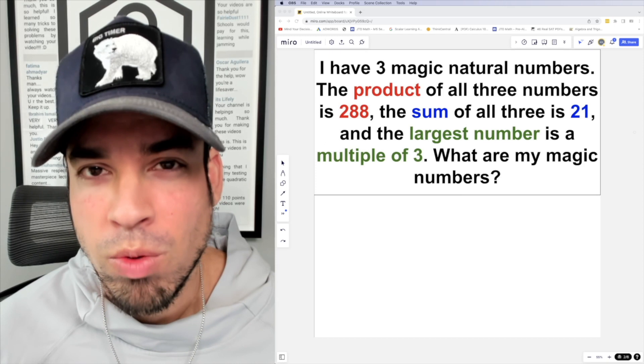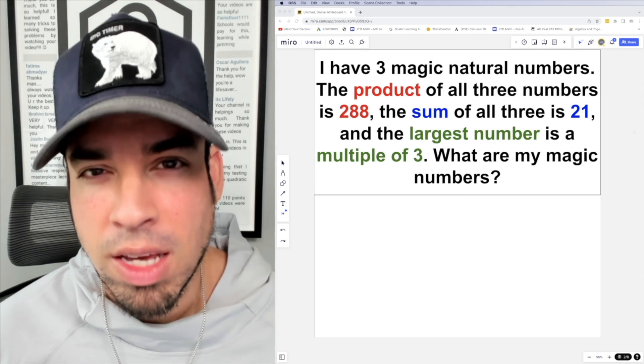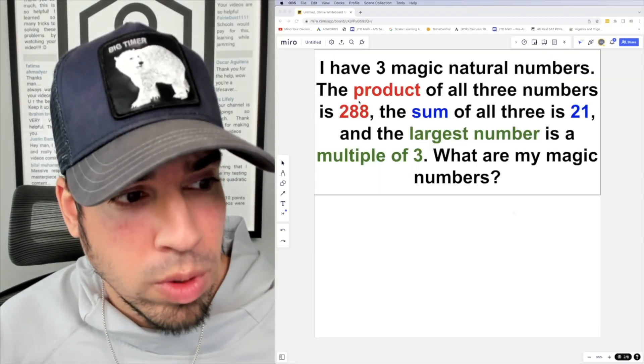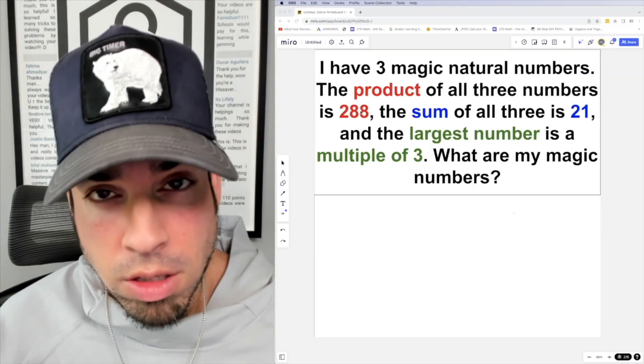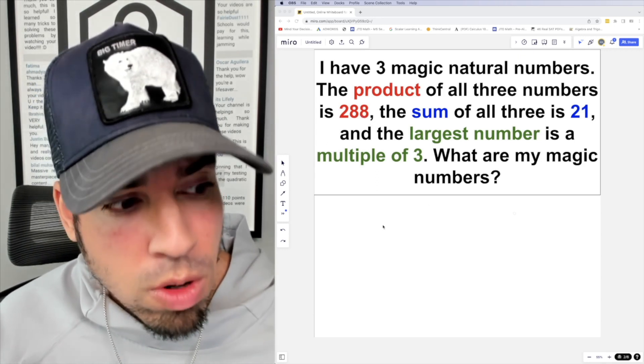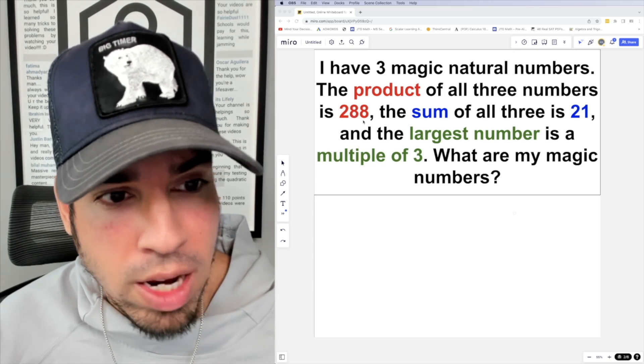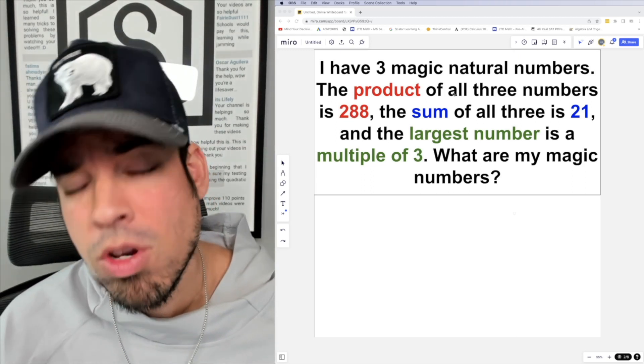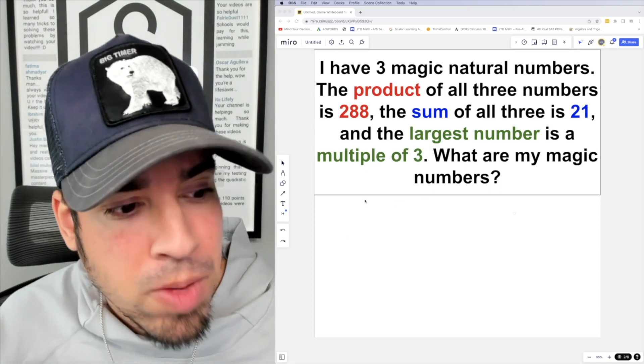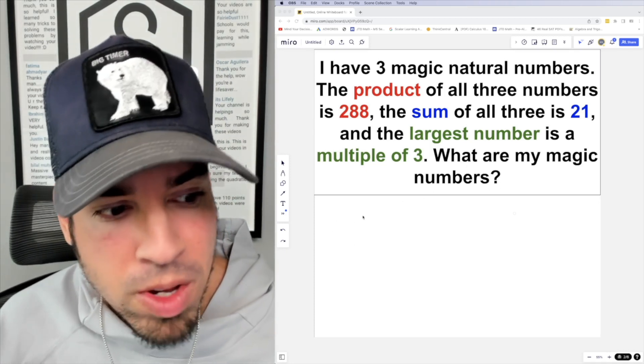Hit that pause button and see if you can figure it out. When you're ready, hit play and I'll give you the explanation. So in a question like this, I want to start with the red clue, the product clue, because I think that limits the choices the most significantly. All three numbers are supposed to multiply to 288. By the way, natural numbers means whole numbers greater than zero, so 1, 2, 3, 4, 5, etc. No negatives, no nothing like that.